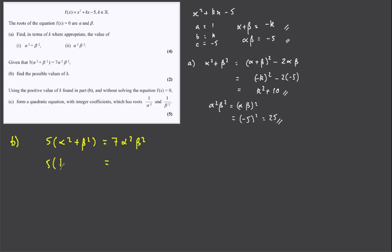k squared plus 10 is what we came up with for that, and 7 lots of 25 was that,